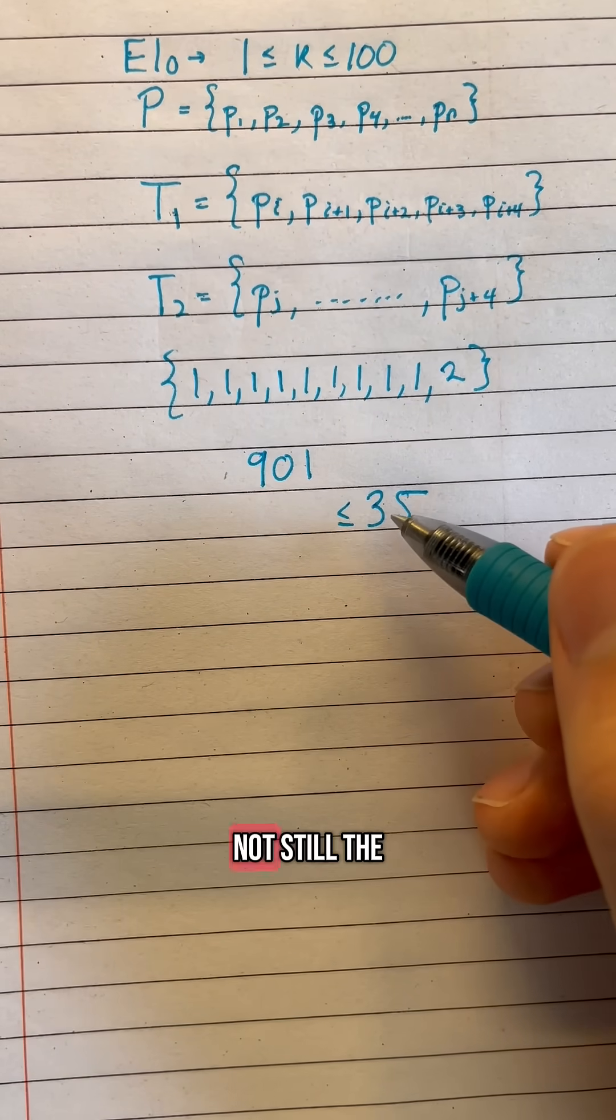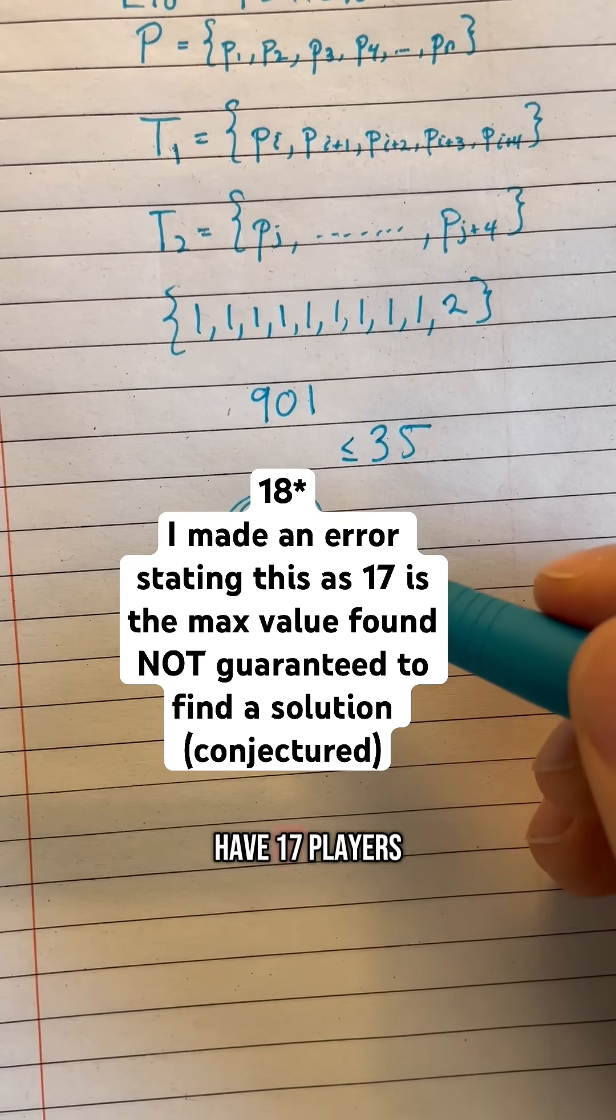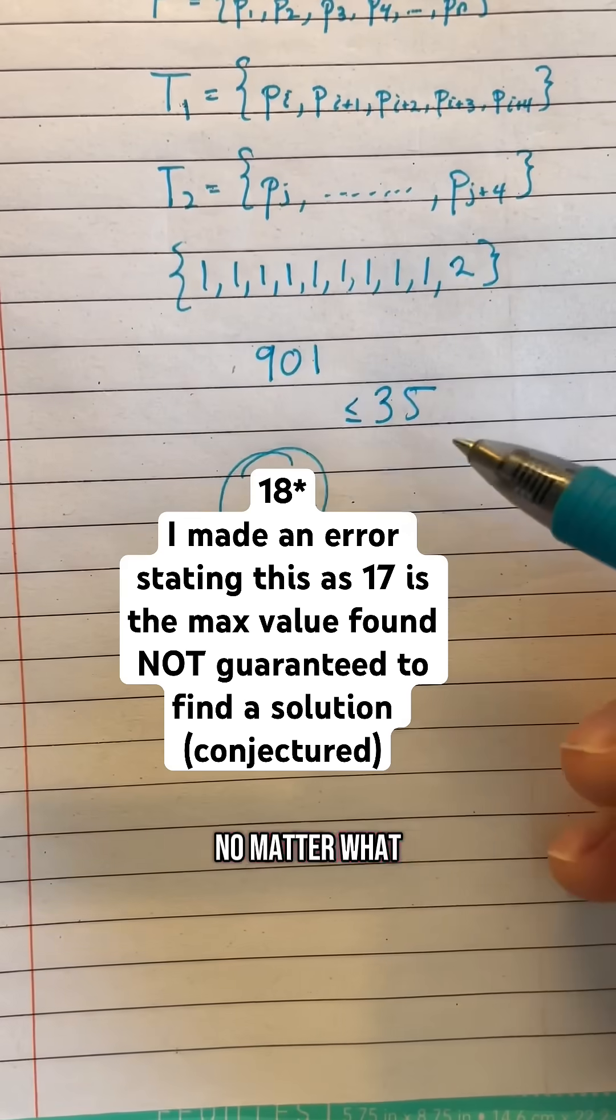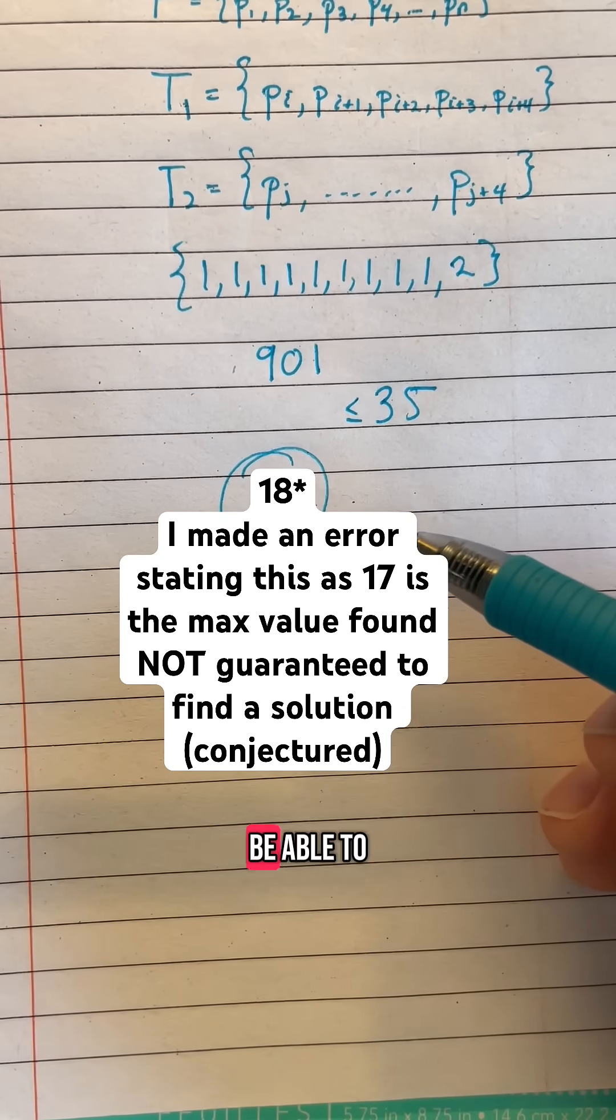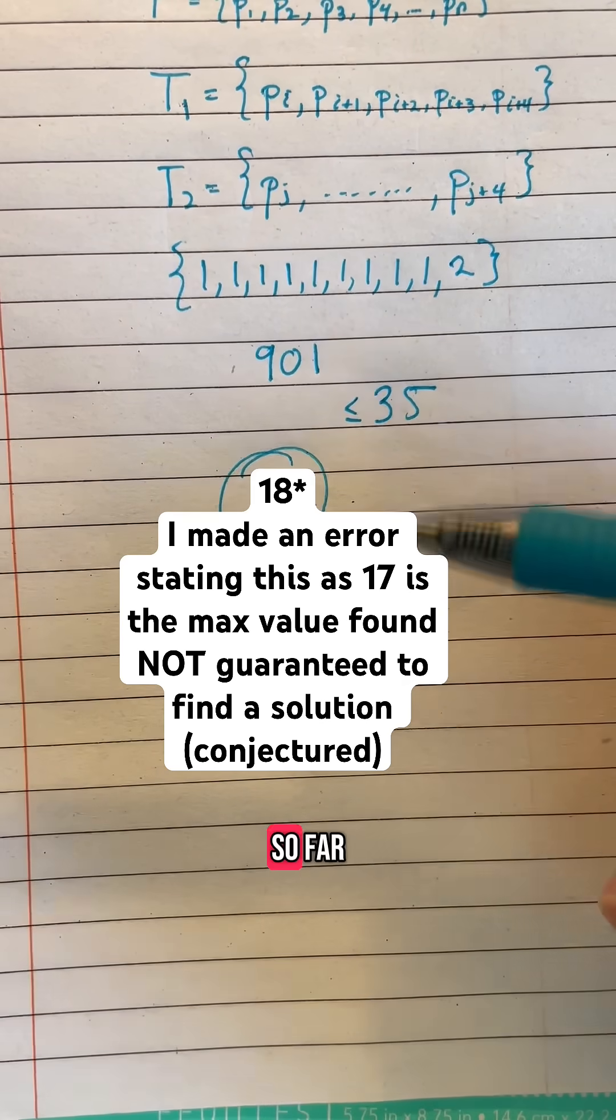However this is still not the optimal bound. In fact, I conjecture that if you have 17 players of ELO scores that are between 1 and 100, no matter what their ELO scores are, you will always be able to find two balanced teams of five. However, nobody's been able to show or prove this so far.